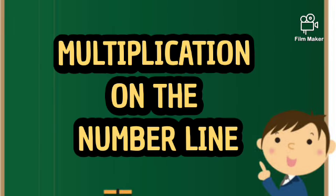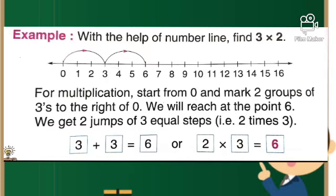Let's now learn about multiplication on the number line. Let us look at this example. With the help of number line, find 3 × 2. For multiplication, start from zero and mark two groups of threes to the right of zero. So from zero, we will move towards the number three.